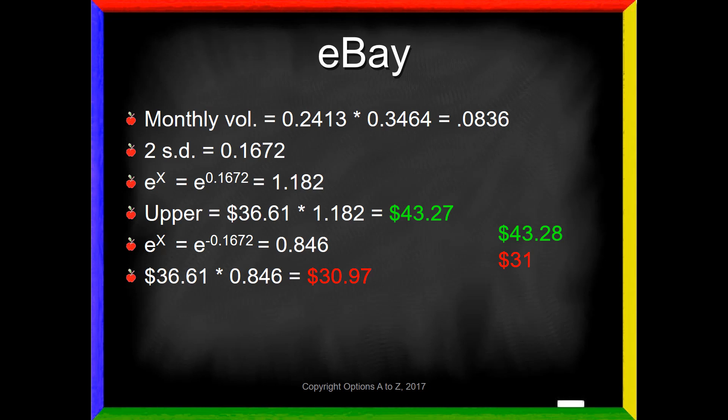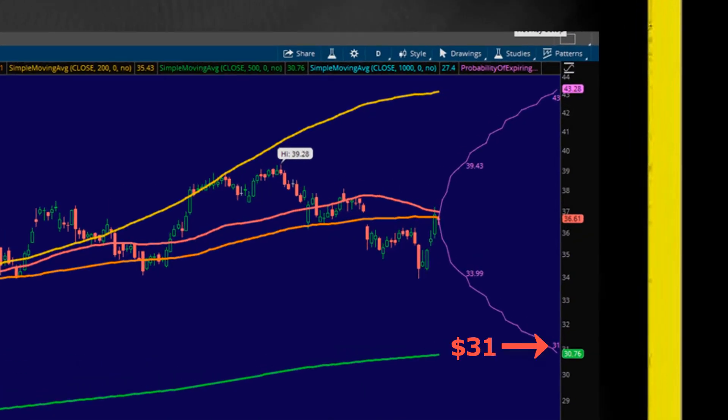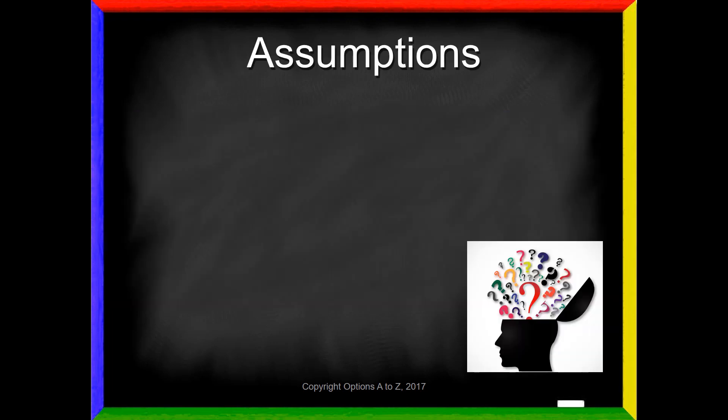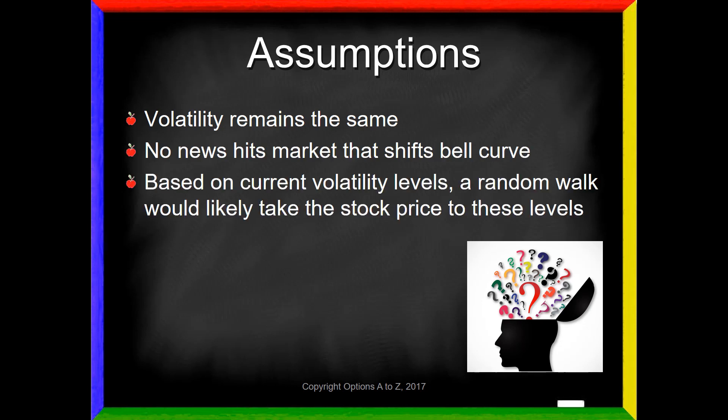And so now if we compare these numbers to the numbers shown on the Thinkorswim platform, we'll see that they are almost dead on. There's some slight rounding just because we didn't account for the future value of the stock price. But at this point, we're really talking about pennies, and it really shouldn't enter into your decision. The basic idea is that over the next 30 days, based solely on volatility, we would expect eBay to have an upper price of about $43 and a lower price around $31. That's what you need to know. But you can see, much easier to just look at a probability of expiring cone in a platform, find that your lower price is $31 down here, your upper one $43.28, and now you know what it means. Thinkorswim also has another neat feature. We can look at different expirations, and it will show us the low and high for various stock prices at different points in time. But this is how they're generating these cones. The main point to understand is about the assumptions. Remember, we are assuming that volatility remains the same throughout the life of the option, and that no news hits the market that shifts the bell curve. And based on the current volatility levels, a random walk would likely take the stock price to these levels.